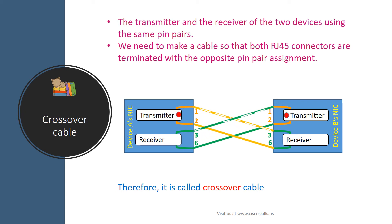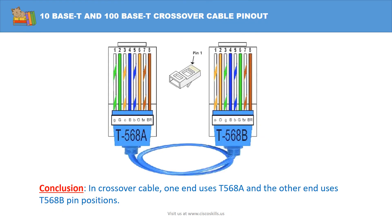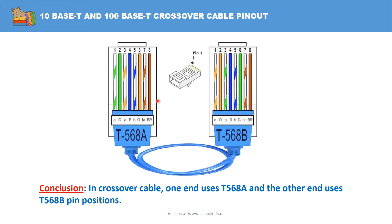As you can see, pin 1 connects to pin 3 and pin 2 connects to pin 6. Therefore, it is called crossover cable. This picture shows the 10 base-T and 100 base-T crossover cable pin-out. In crossover cable, one end uses T568A and the other end uses T568B pin positions.